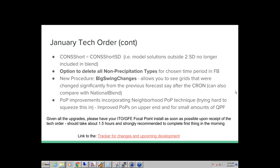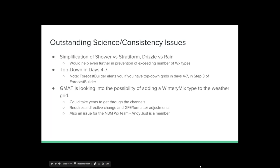Any other questions to this point? Let me continue on. Some outstanding science issues: going back to the number of weather types — when this whole issue came out of the Christmas storm with some offices having failures because too many weather types, this is just another example of where we really need to simplify the weather types. One way would be to do shower versus stratiform, drizzle versus rain — just call all drizzle rain, call anything showery as stratiform, and keep it simple. Those are things that would greatly help.